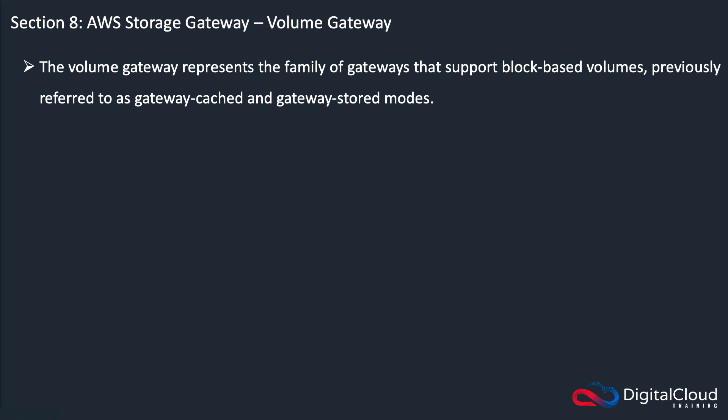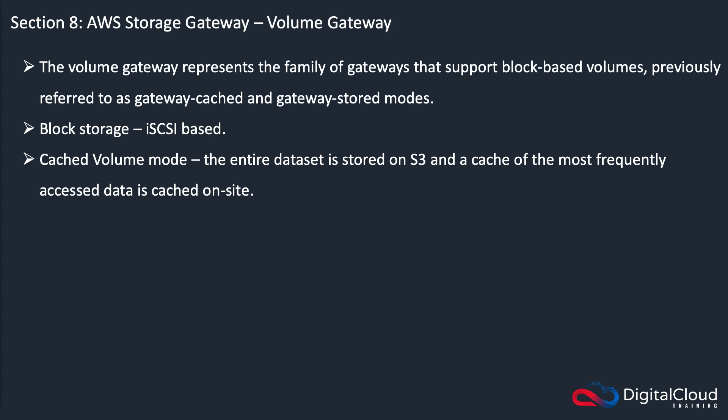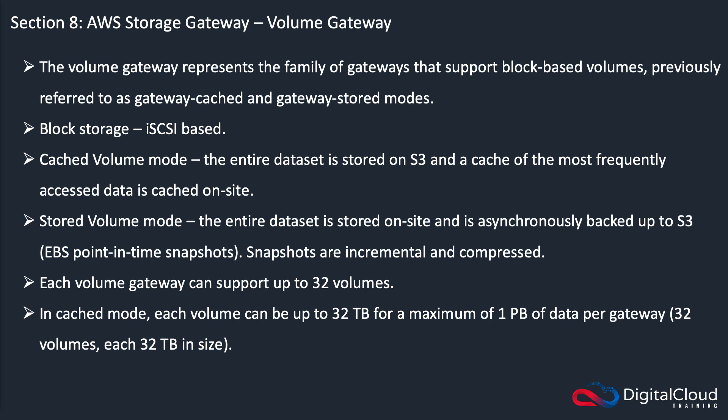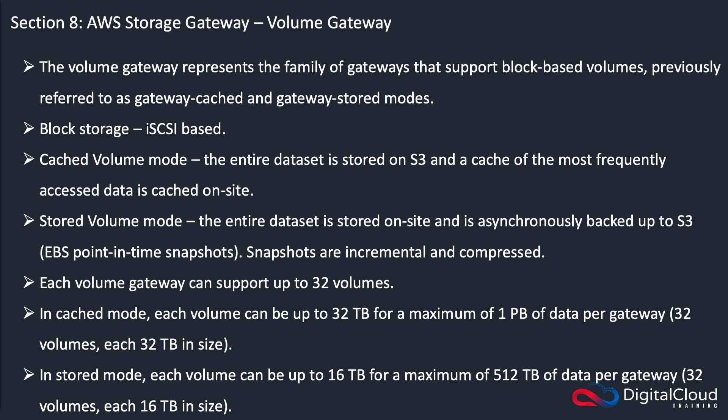Volume Gateway represents the family of gateways that supports block-based volumes, previously referred to as gateway cached and gateway stored volumes. It's block storage, iSCSI-based. In cached volume mode, the entire data set is stored on S3 and a cache is accessed locally on-site. In stored volume mode, the entire data set is stored on-site and asynchronously backed up to S3 as EBS point-in-time snapshots, which are incremental and compressed. Each volume gateway can support up to 32 volumes. In cache mode each volume can be up to 32 TB (maximum 1 petabyte); in stored mode each volume can be up to 16 TB (maximum 512 TB per gateway).